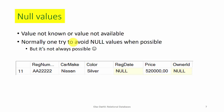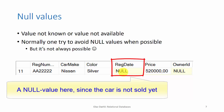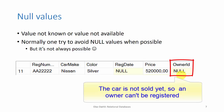A null value is not a real value, but an indicator that tells us that no value has been registered in a specific field. Normally one tries to avoid null values when possible, but it's not always possible. For example, a car that is not sold yet won't have a value in the registration date field, and since there's no owner to register yet, we also have a null value in the owner ID field.